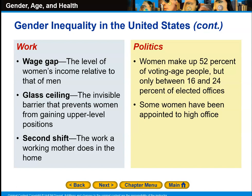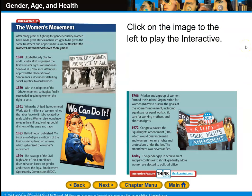Some women have been appointed to high office. After many years of fighting for gender equality, women have made great strides in their struggle to be given the same treatment and opportunities as men. As early as 1848, Elizabeth Cady Stanton and Lucretia Mott organized the first women's rights convention in Seneca Falls, New York. The attendees approved the Declaration of Sentiments, a document detailing social injustice towards women. It was largely based on the Declaration of Independence. It took about 80 years before women actually got the right to vote.